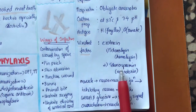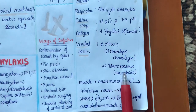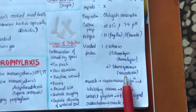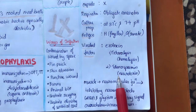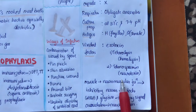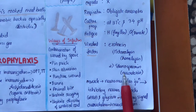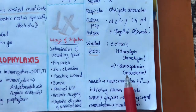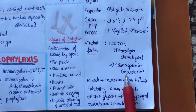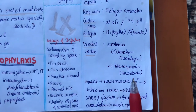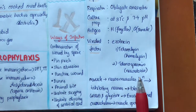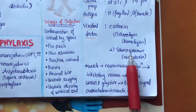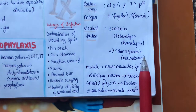Before telling about the mechanism of tetanospasmin, we have to know how our muscles contract and how the nervous system controls it. Whenever our muscle has to be contracted, our CNS or central nervous system will give an impulse to the muscle telling it to contract. And at a particular time, the contraction has to be stopped. In order to stop the contraction of muscle, the neuroinhibitory neurons will produce the inhibitory neurotransmitters GABA and glycine. And if we have tetanus, the tetanospasmin will block the secretion of GABA and glycine.